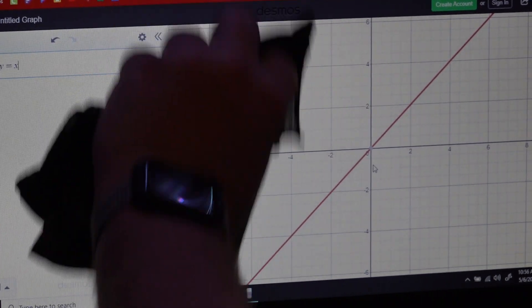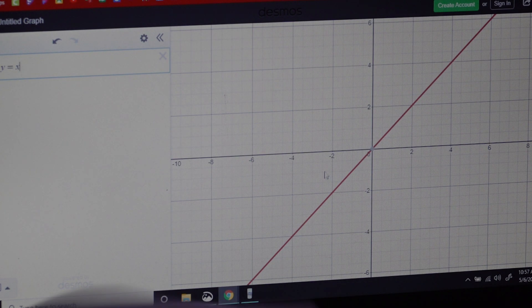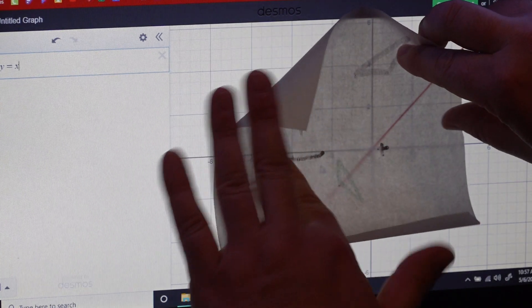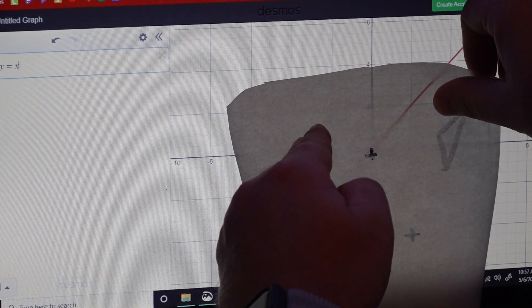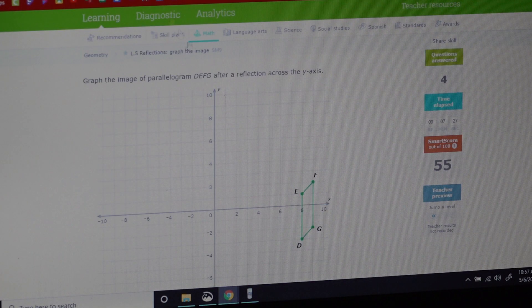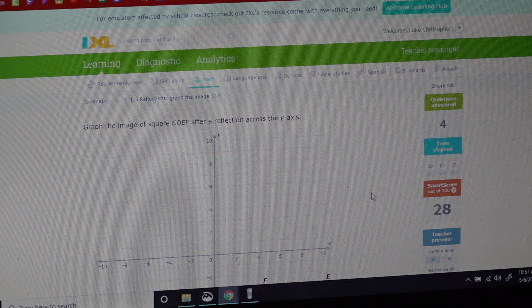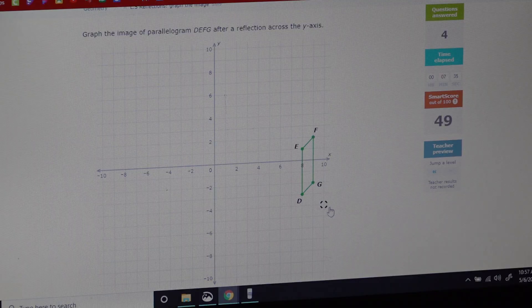So you're gonna have to reflect over that line. Sometimes using patty paper could help because then you would have to flip it this way to get your image, which—I don't know if I can get that example to pull up—but there you go.